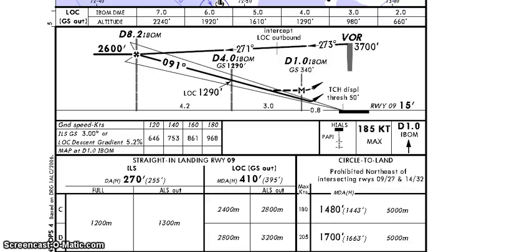ILS minima with full ALS for category Charlie aircraft is 1200 meters, and with ALS unserviceable is 1300 meters. In case of glide slope out procedure, minimum descent altitude is 410 feet, and visibility minima with ALS is 2400 meters and with ALS unserviceable is 2800 meters.